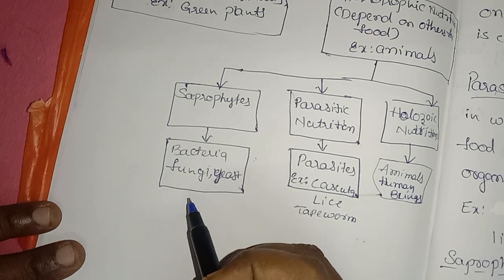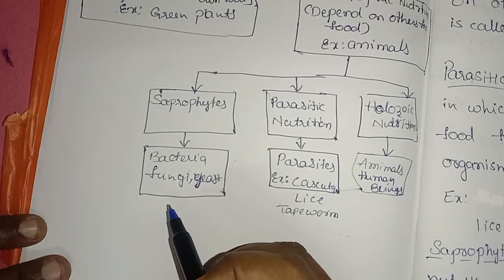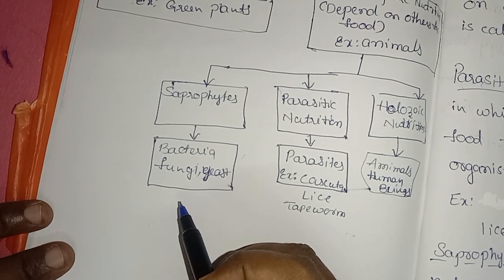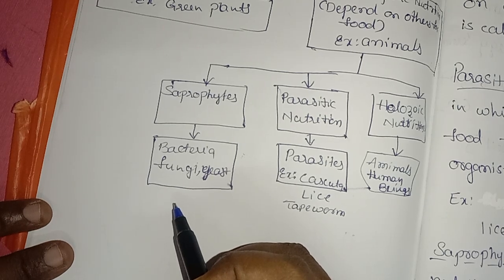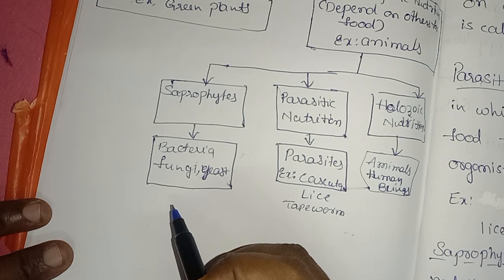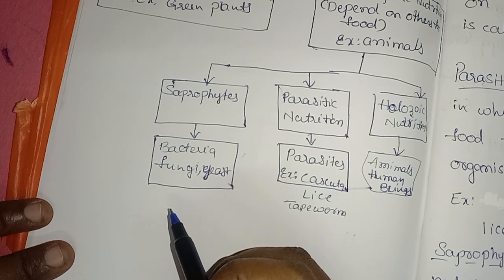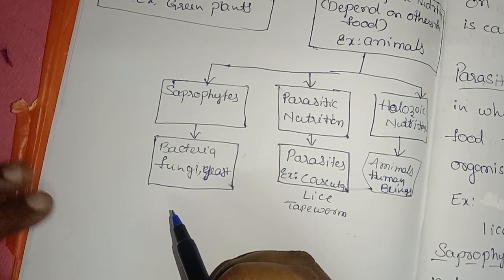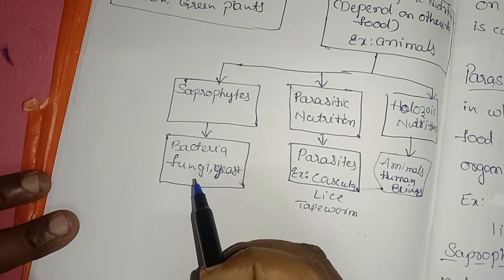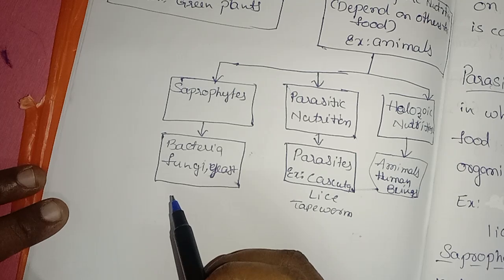Saprophytic nutrition is a type in which organisms obtain their food from the decaying organic matter of dead plants and animals, or rotten food. Before absorbing nutrients, they first decay and break down the molecules outside their body, then absorb the nutrients. Examples: mushrooms, mold, and yeast.